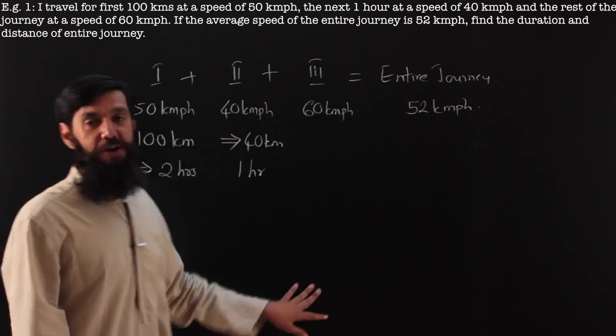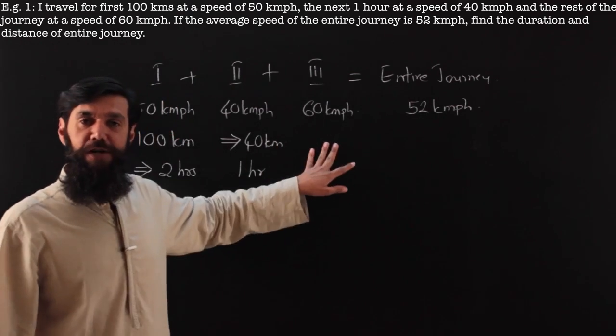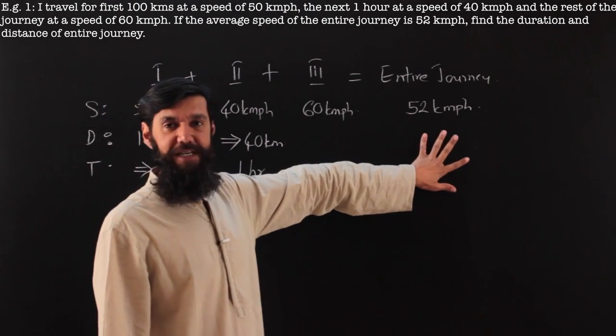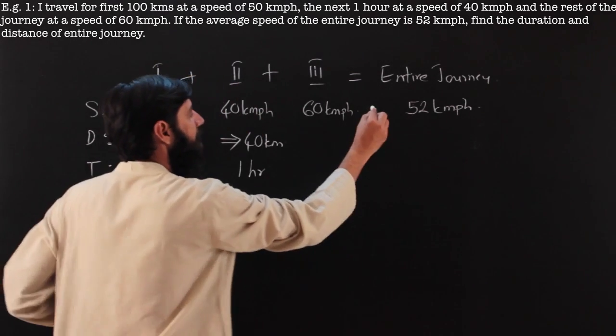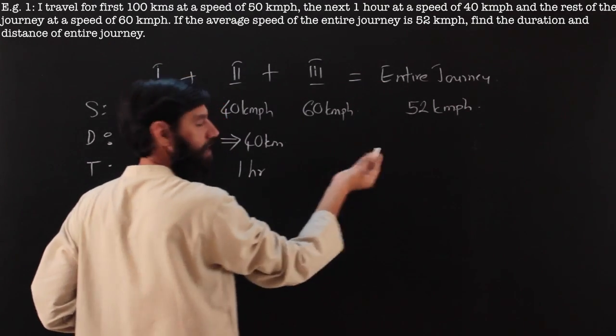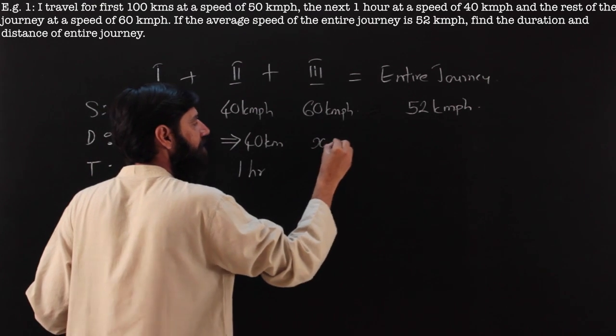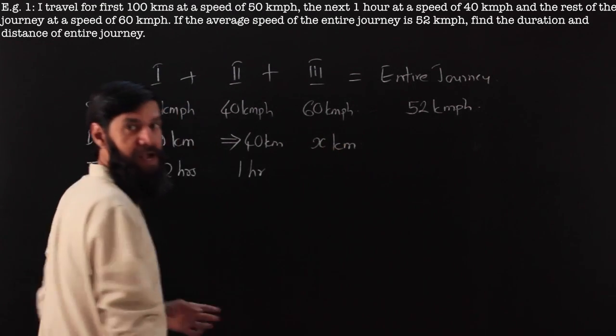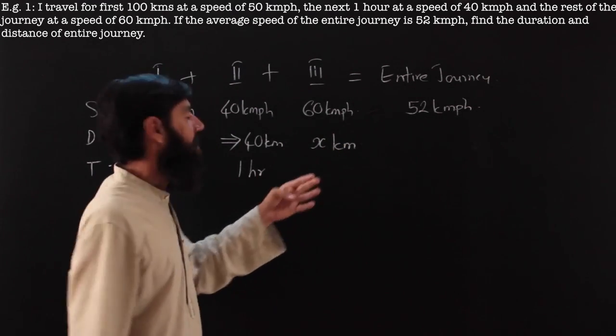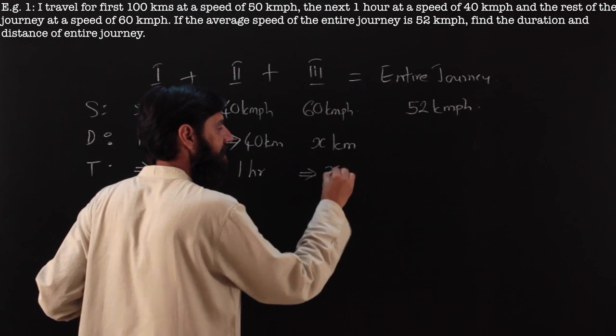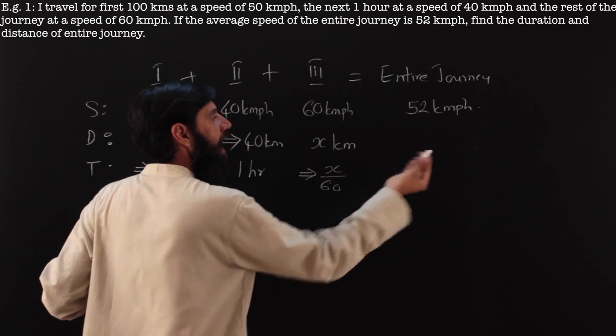Now for the rest of the journey, we neither know the distance nor the time. But I know the average speed. The average speed is nothing but summation of total distance divided by total time. So if I start with x kilometers, since I have assumed my distance, my time could be found as time equals distance by speed.